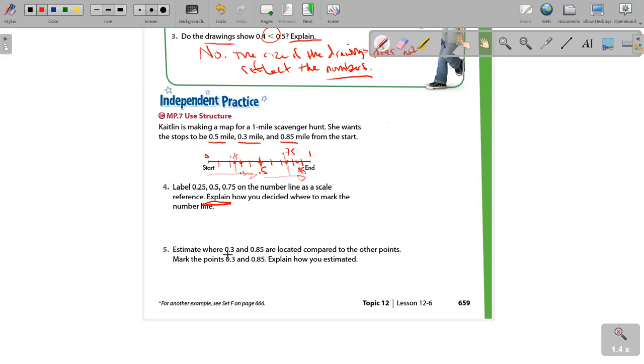Estimate where 0.3 and 0.85 are located compared to the other points. Mark the points 0.3 and 0.85. Explain how you estimated. Now, we already marked 0.85 right here. We also marked 0.3 right here. Now, when they're talking about estimating, they also want us to explain how you estimated.